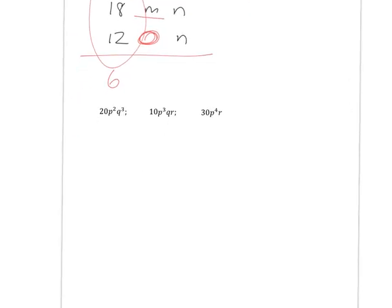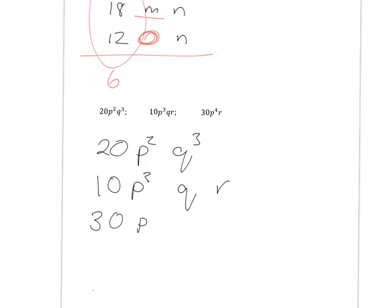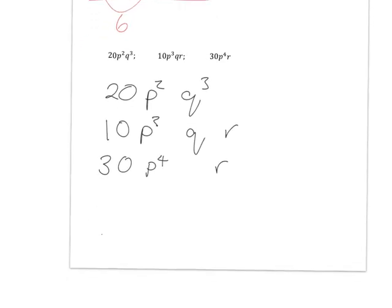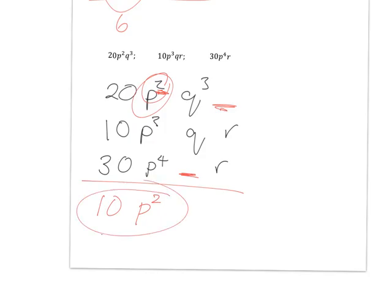For the second exercise with 20p²q³, 10p³qr, and 30p⁴r: first, the highest common factor of 10, 20, and 30 is 10. Can I include p? Yes, each term has p, but I must take the lowest power, which is p squared. Can I include q? No, because 30p⁴r has no q. Can I include r? No, because 20p²q³ has no r. So the highest common factor is 10p².